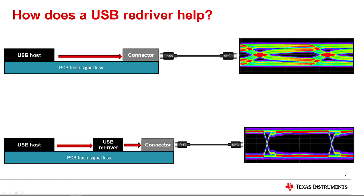A long USB channel with a highly attenuated signal must be able to perform as well as a short USB channel, which can create a system design dilemma in the location of the USB connector. USB redrivers use equalization to recover a signal from a completely closed eye and retransmit that recovered signal while remaining transparent in the system. By having the capability to recover a bad signal, the USB redriver can effectively extend the length of the channel on the system while maintaining the highest data rate available, which allows flexibility in the placement of the USB connector.